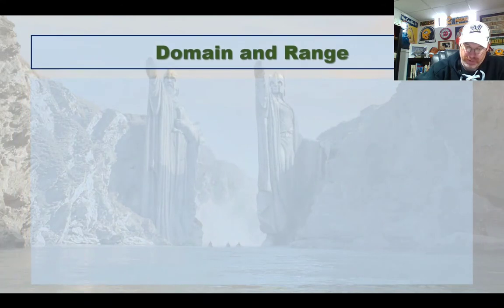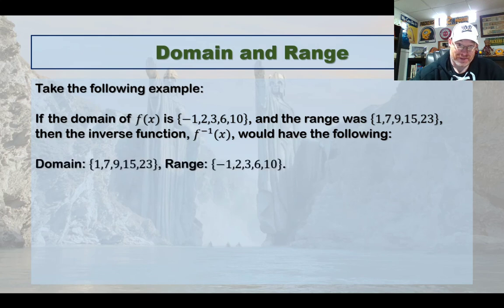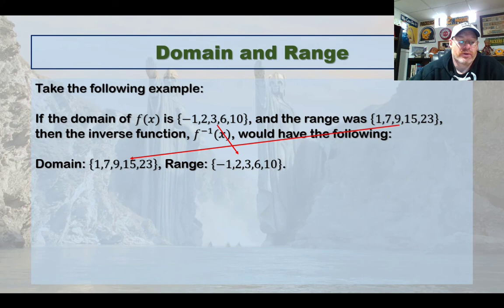I'll use some actual numbers to kind of explain what I mean. Suppose that we have this following situation. We just know that the domain of the original function is {-1, 2, 3, 6, 10}, and that when you plug those values in, the range ends up being {1, 7, 9, 15, 23}. The inverse operation is exactly the opposite of that. The inverse operation has the range of the original as its domain, and the domain of the original ends up being the range.